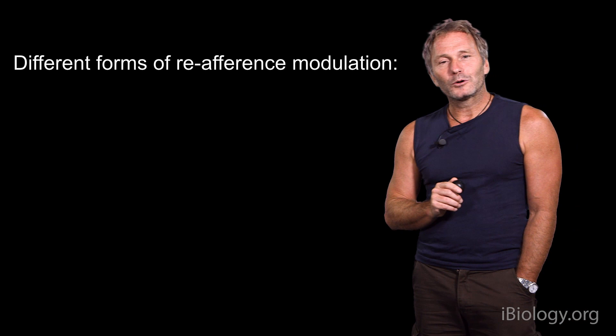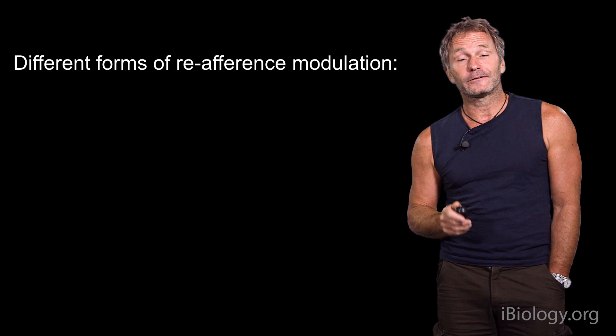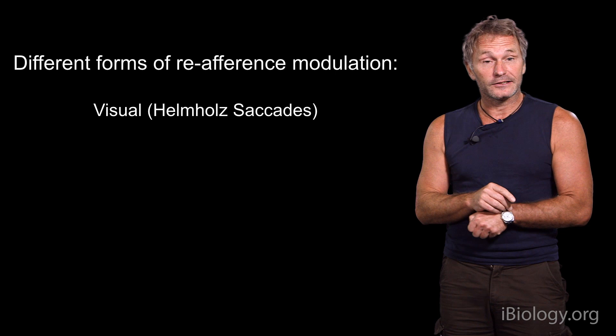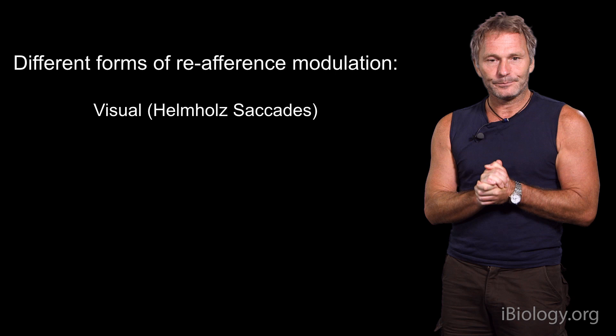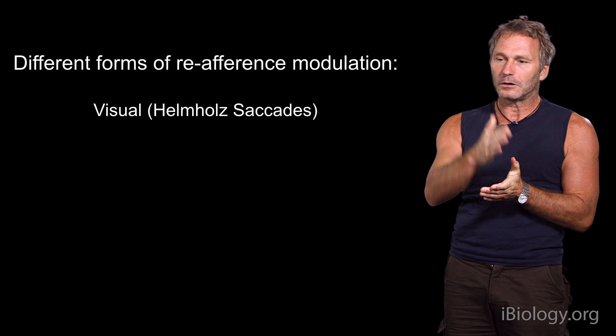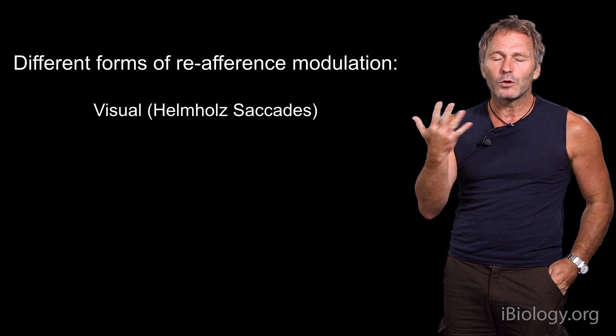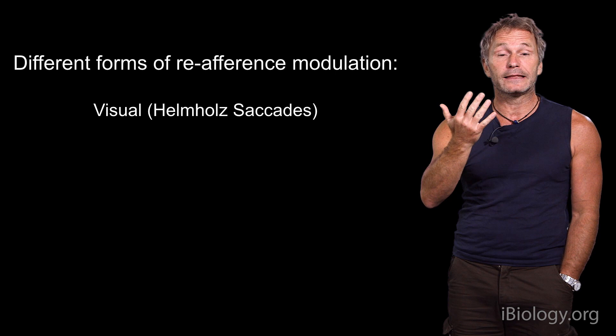I want to walk you through several forms of this reafferent modulation, starting with the visual system. I'd like the audience to participate. Just move your eyes around the screen or room — you'll realize that when you move your eyes, the image projected on your retinas moves, but there's no apparent motion. Something in your brain cancels out the motion that's clearly there as a consequence of eye movement.